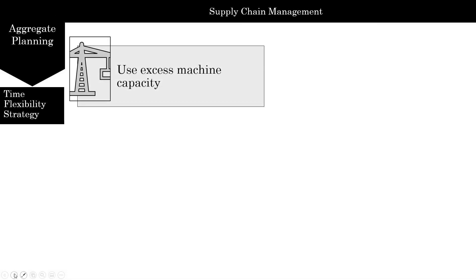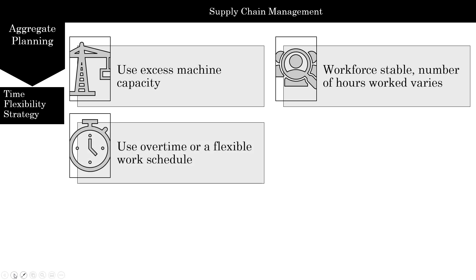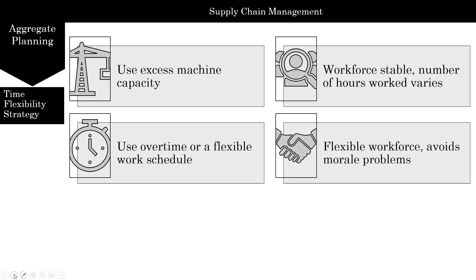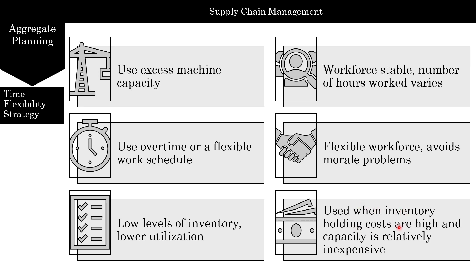The time flexibility strategy uses excess machine capacity. Here we keep the workforce stable and vary the number of hours worked. We use overtime, flexible work schedules, or adjusted scheduling to handle capacity needs. A flexible workforce avoids morale problems, results in low levels of inventory, and provides lower utilization which gives us some buffer. It's used when inventory holding costs are high and capacity is relatively inexpensive.